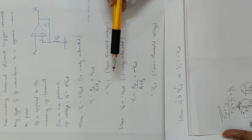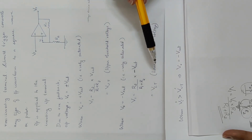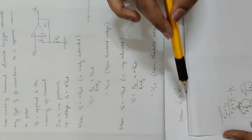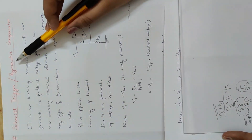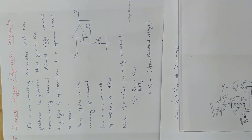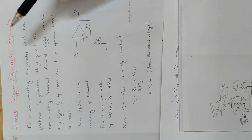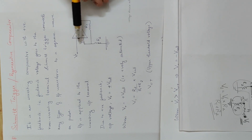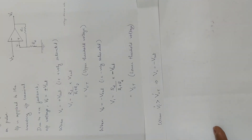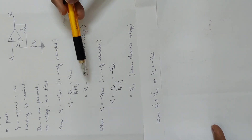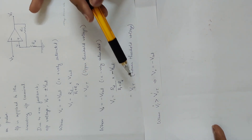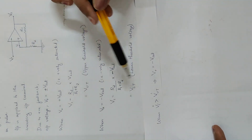The non-inverting input terminal voltage is one of the upper threshold voltage or lower threshold voltage. This is a comparator — we compare minus and plus voltages. We will compare vi to v1, and we will compare vi to the upper threshold and lower threshold values.